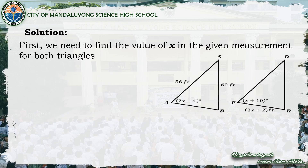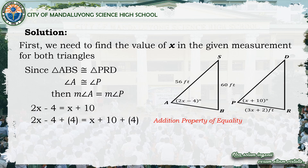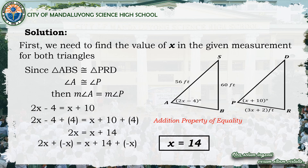To solve, first find x. Since triangle ABS is congruent to triangle PRD, angle A is congruent to angle P, so their measures are equal. Angle A measures 2x minus 4 degrees and angle P measures x plus 10 degrees. Setting them equal: 2x minus 4 equals x plus 10. Adding 4 to both sides gives 2x equals x plus 14. Subtracting x from both sides gives x equals 14.